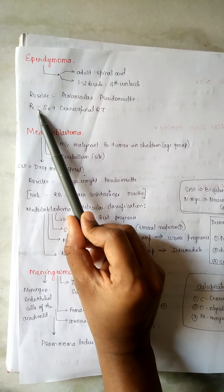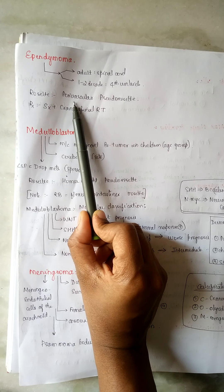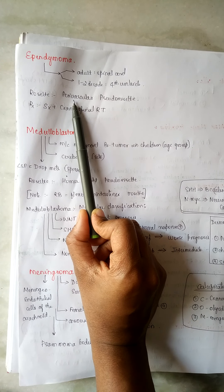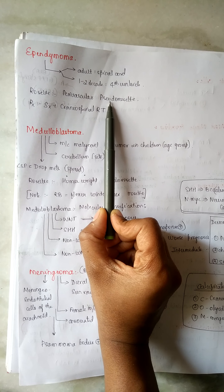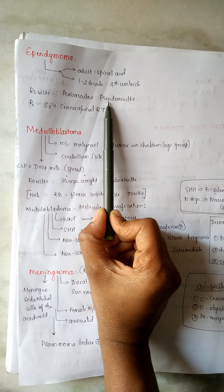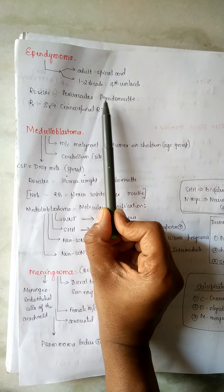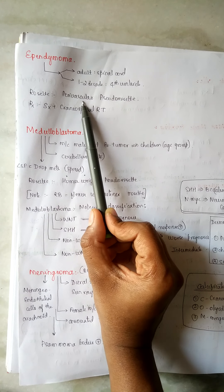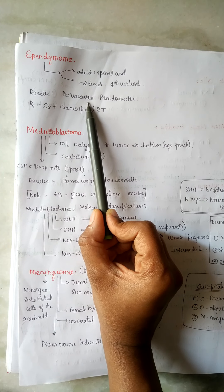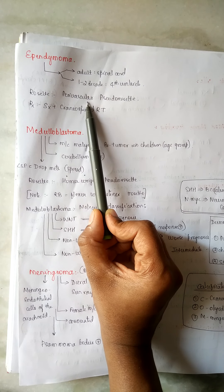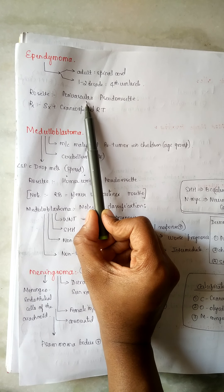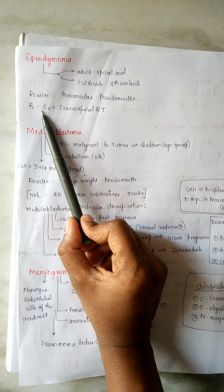In ependymoma, there is a special feature called rosettes. The type of rosette present is perivascular pseudorosette. When the word 'pseudo' is used, it means cells are in a rosette form but the inside has some deposition. In ependymoma, the center contains a vascular blood vessel, hence it is called a perivascular pseudorosette.